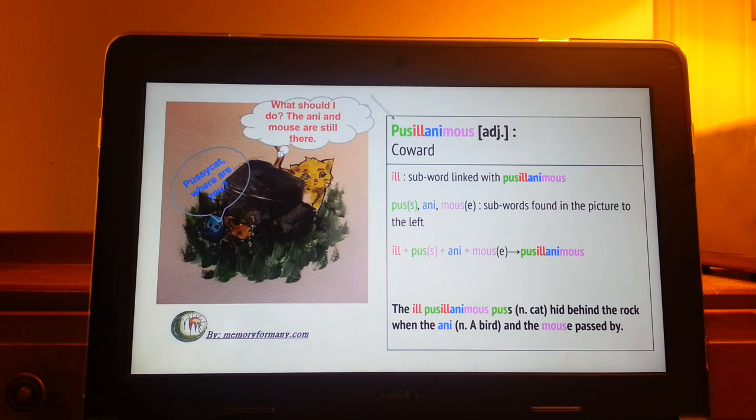Step 1. You see the subwords of Pusillanimous are L, Pus, Annie, and Mouse. Now, you should be able to find those subwords in the picture to the left.